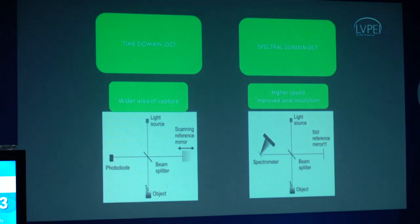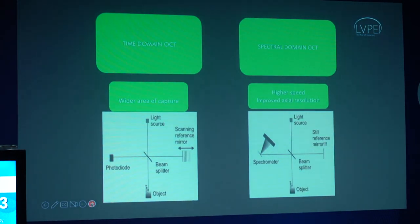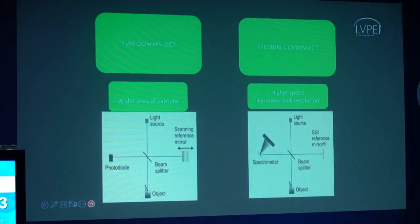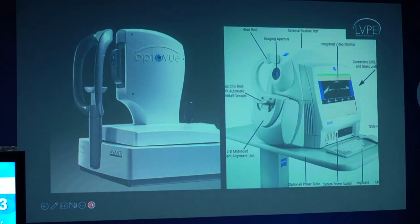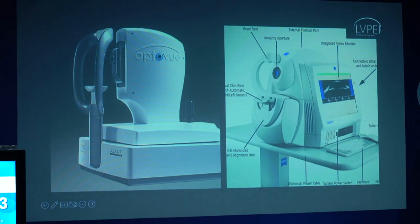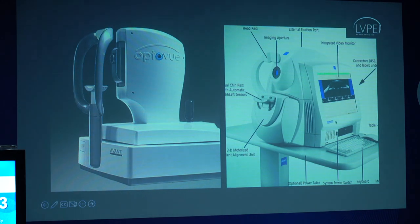OCT is primarily divided into time domain and spectral domain. The time domain OCT has a wider area of capture, whereas the spectral domain OCT has higher speed and improved axial resolution. This is a commonly used OptoVue OCT, which is a spectral domain device. You have the various screens, the chin rest for the patient, and the imaging aperture.